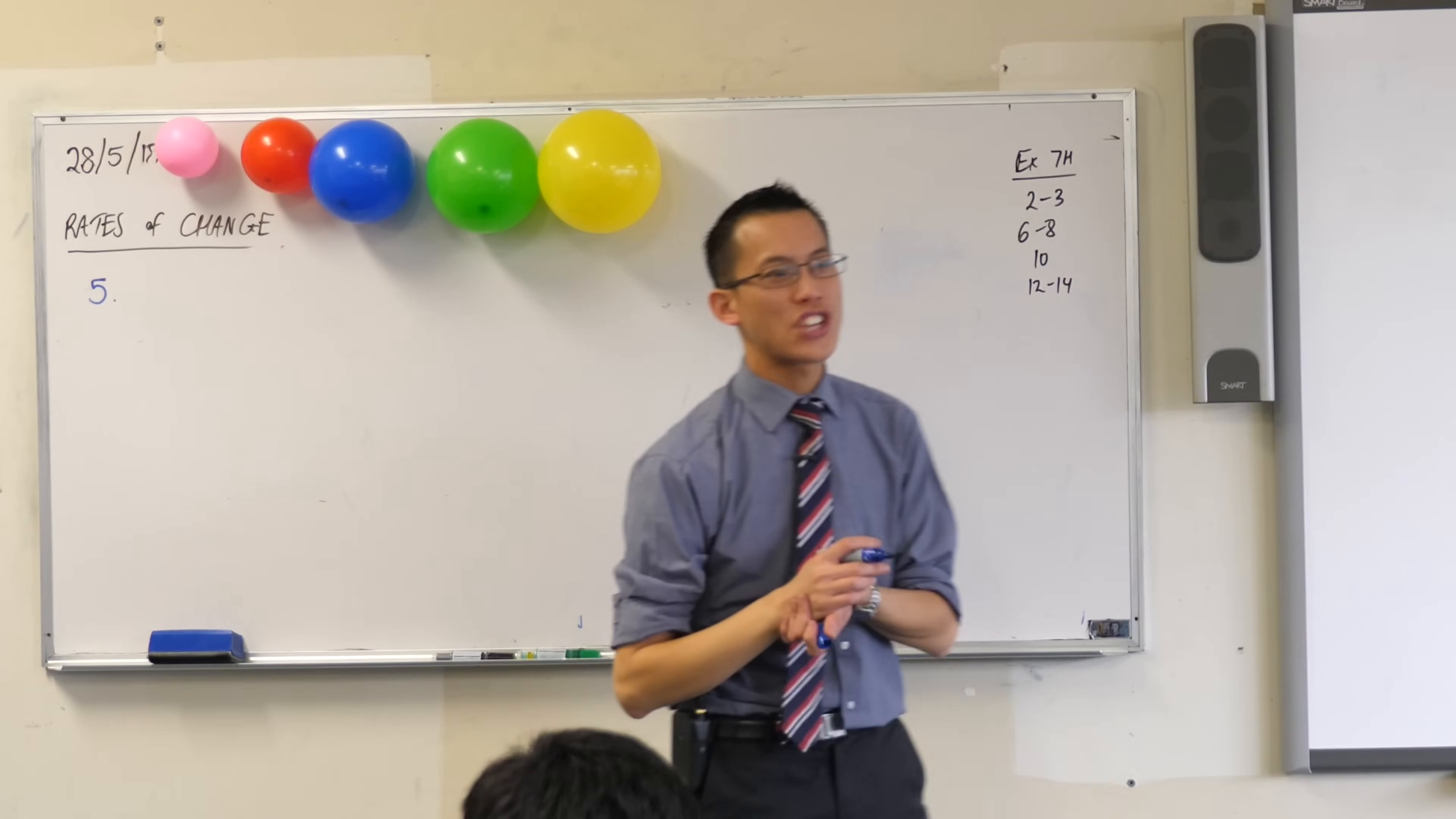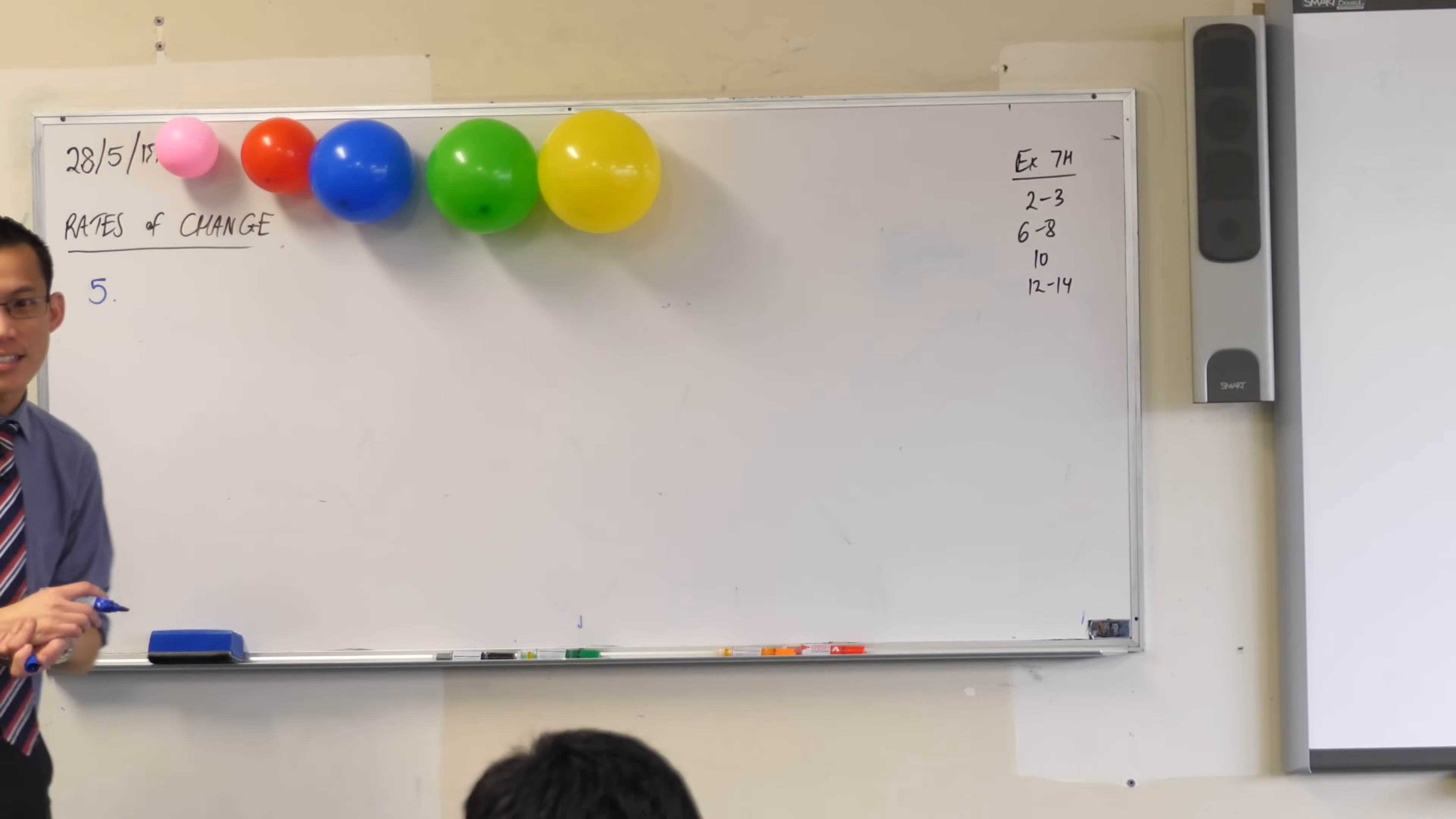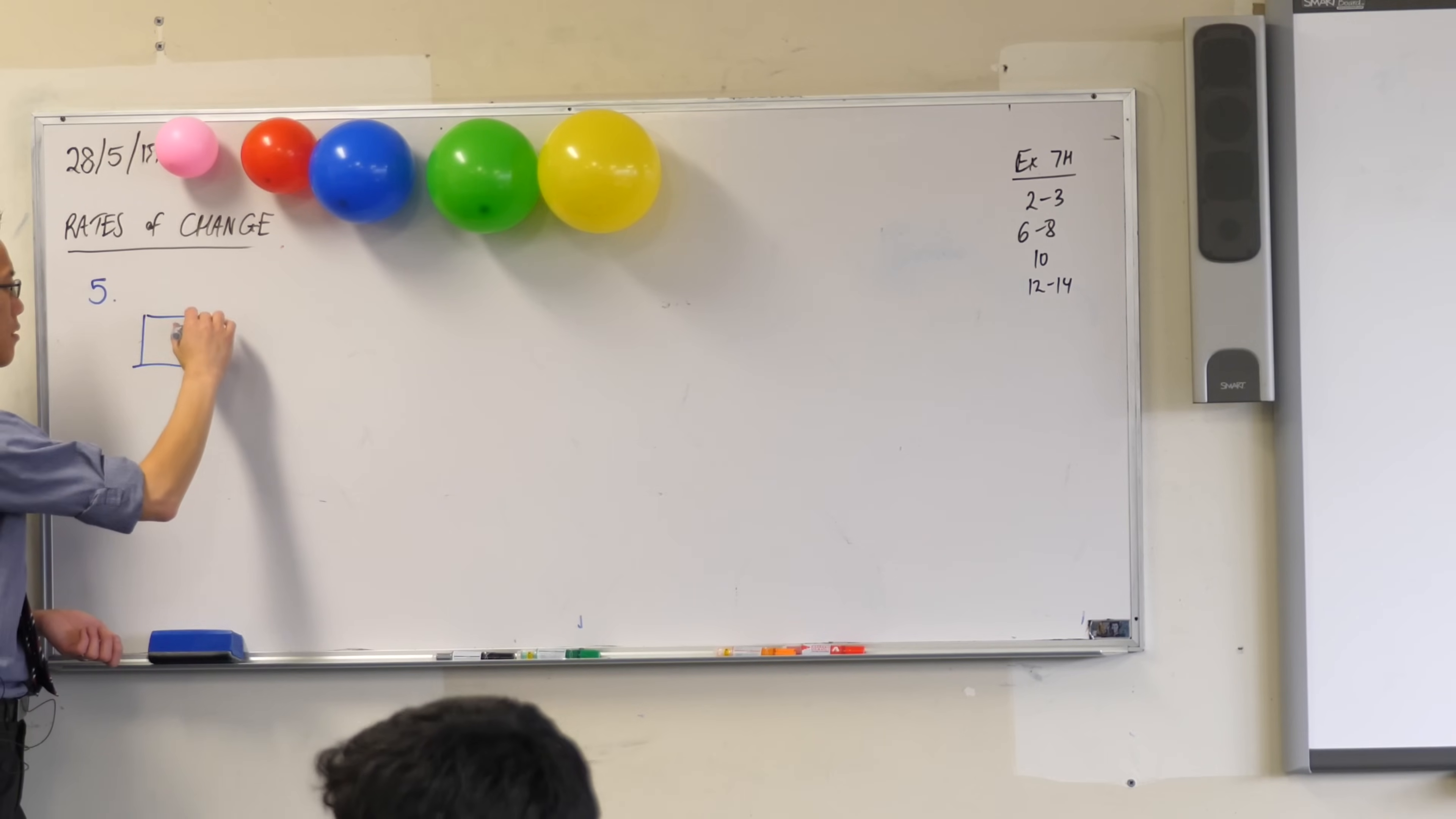So now you can all tell me, what is the shape that they are looking at? It's a cube, right? Can you just draw a little cube for me? That's a terrible cube. Let's try that again.